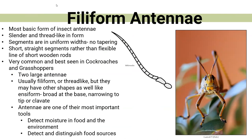Filiform antennae are very basic — very long and skinny. They do not taper; they are the same width from the very beginning of the scape all the way to the end. They have short, straight segments, but they are segmented — you can see little lines along them. This type is found in grasshoppers and some species of cockroaches. They detect moisture in their food and the environment and also help find food sources. This is one of the most important tools for grasshoppers — still a very simple form of antenna.